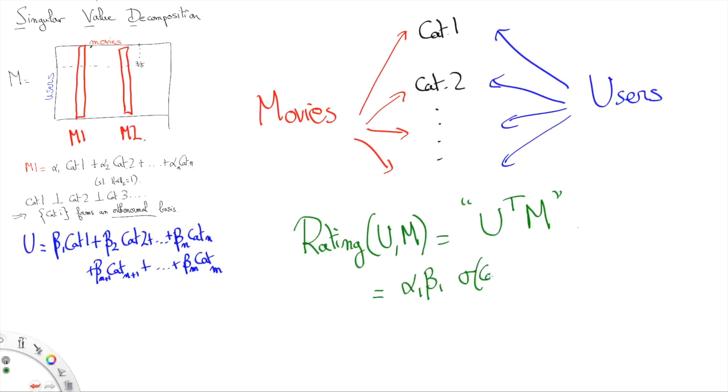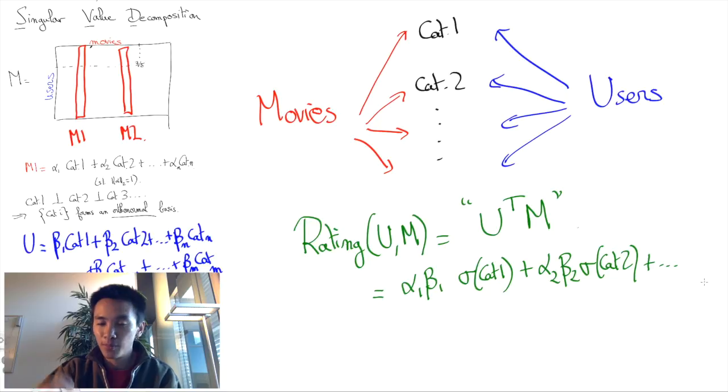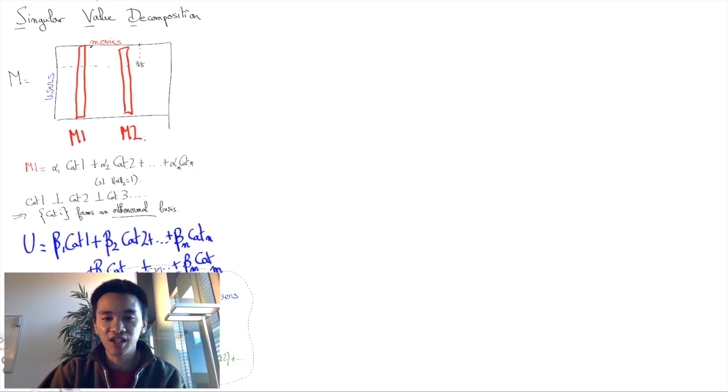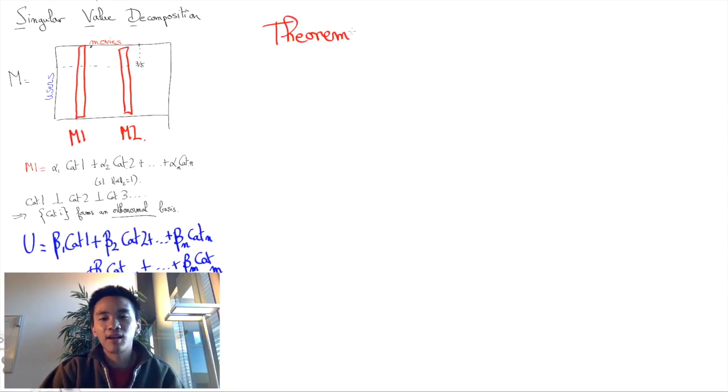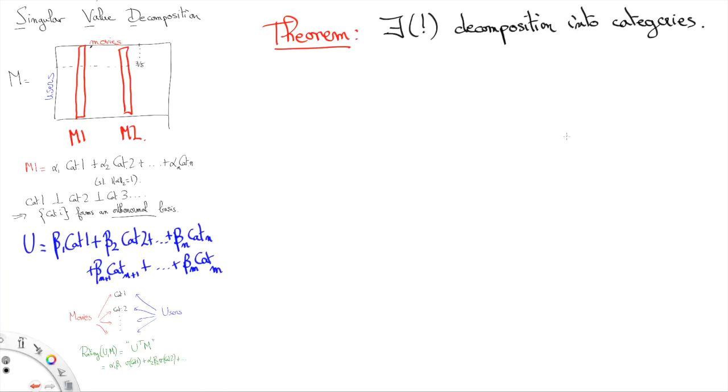and by multiplying each of these coefficients by some so-called singular value which computes how a user of category I rates a movie of category I. The breathtaking theorem of SVD asserts that there is an essentially unique way to determine categories the way we intend to.